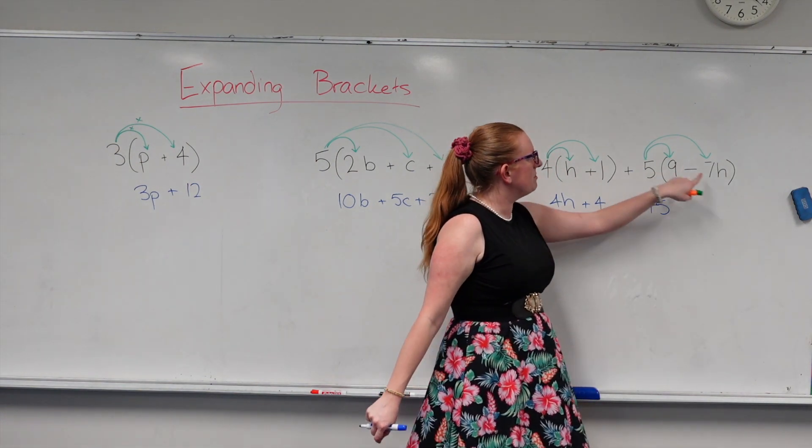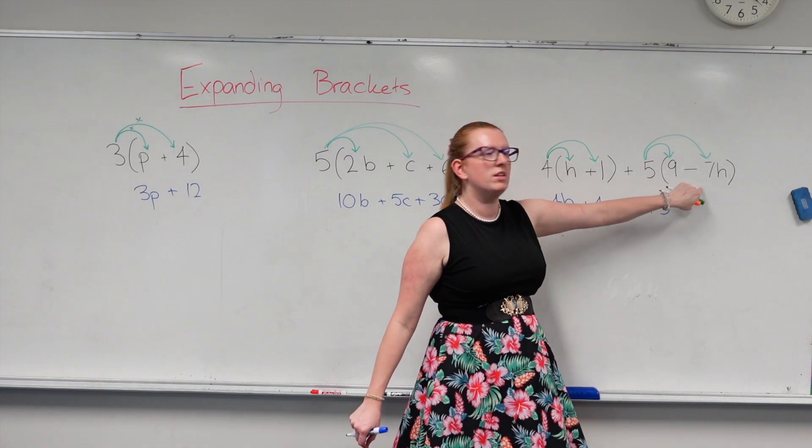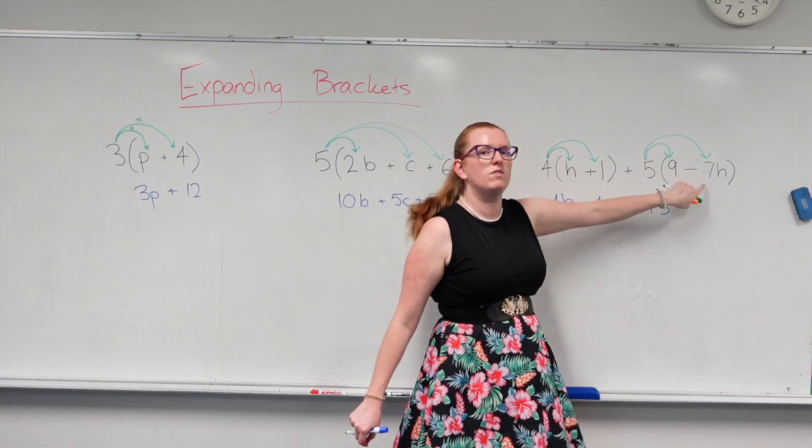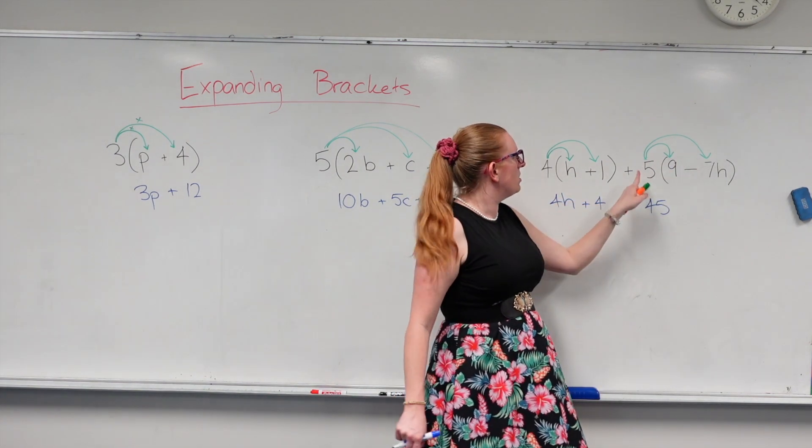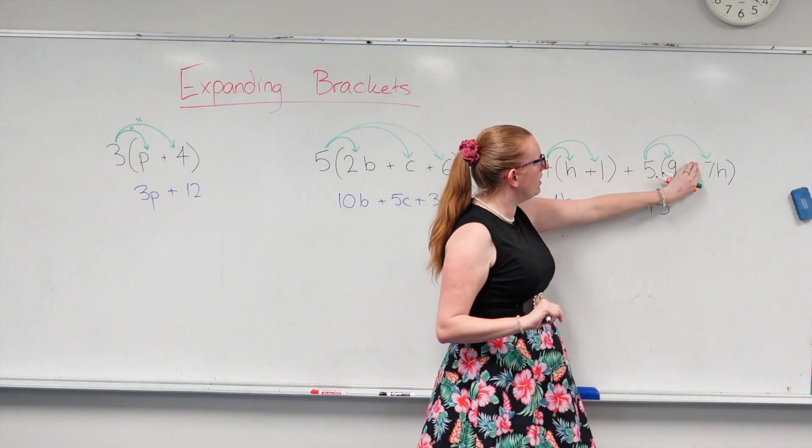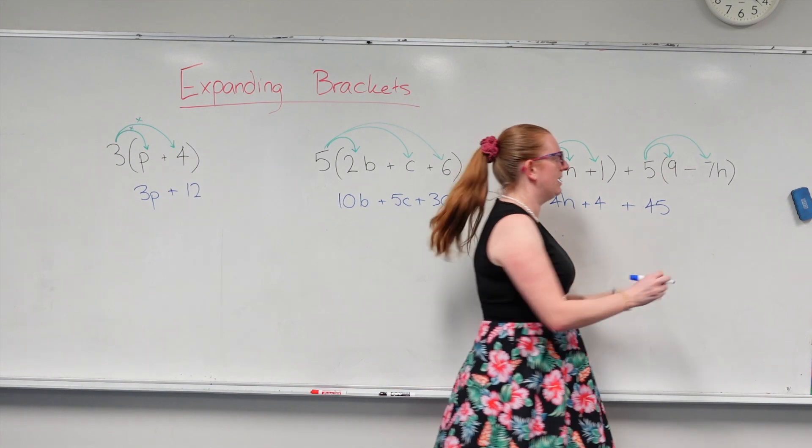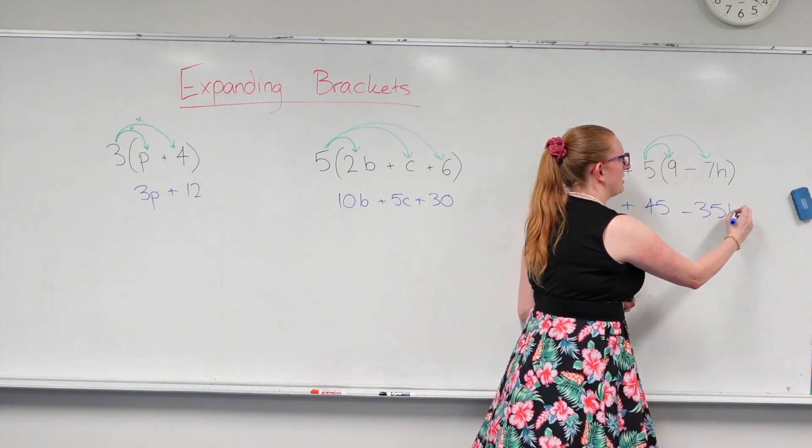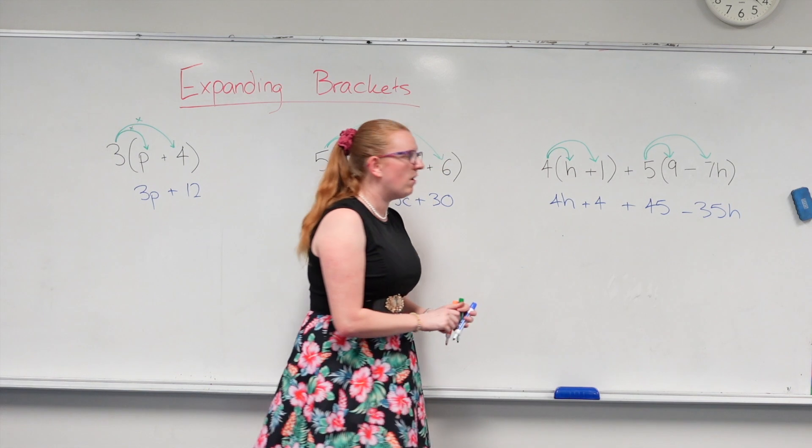Then I'm going 5 times negative 7h. And I know that this is a negative 7 because that negative goes with the 7. So I'm going to ignore the negative for now. So 5 times 7 is 35. And then I'm making it negative. So negative 35. And I just chuck the h on the end.